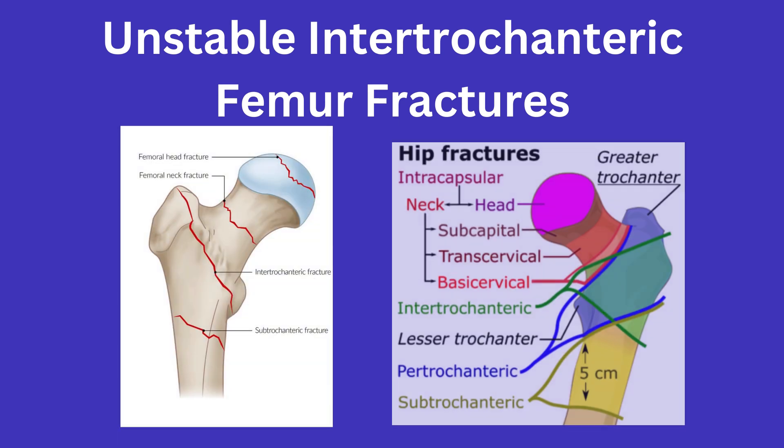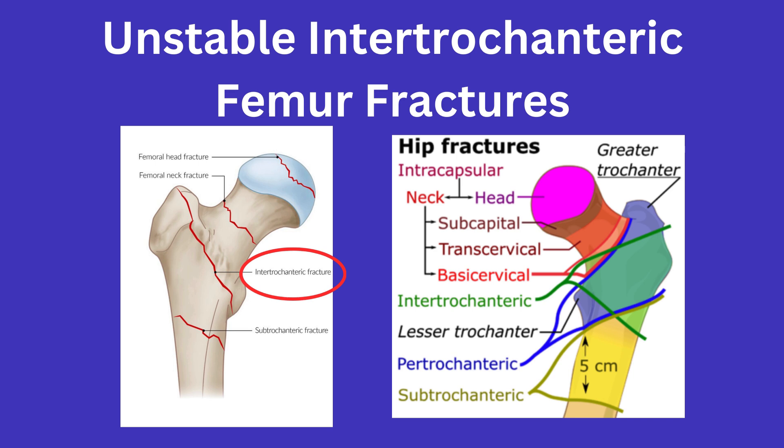An intertrochanteric femur fracture is a fracture line that runs between the greater and lesser trochanters of the femur. You can see here on this diagram the various types of fractures that can afflict this region and the different names we use depending on if it goes through both trochanters, between, has extension below, etc. Today however we will focus on the intertrochanteric pattern specifically.